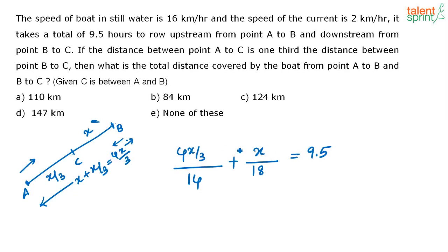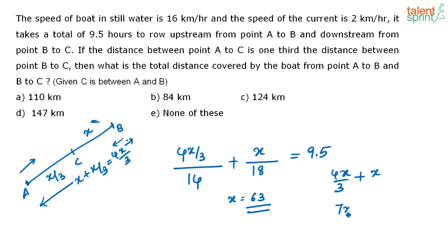When you solve this, you get X is equal to 63. Just cross check — if you are not getting that, please do let me know. So if X is equal to 63, the boat is covering 4X by 3 upstream and then X downstream. So the total distance covered by the boat is 7X by 3. Putting X equal to 63, you will get the answer as 147.